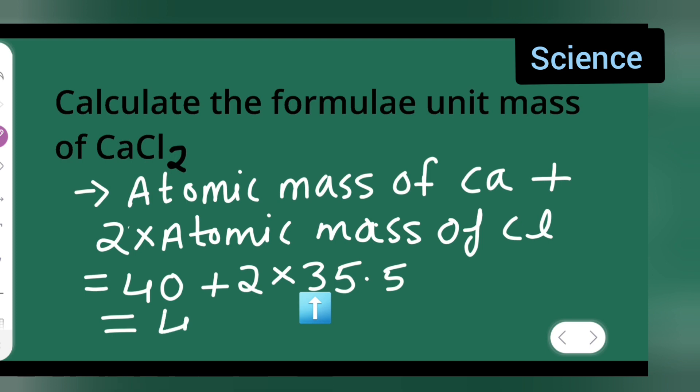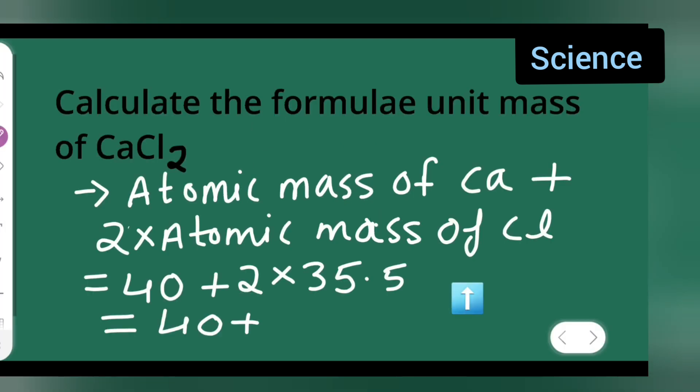This is equal to 40 plus 35.5 multiplied by 2. So 35.5 multiplied by 2: 2 fives are 10, carry one, 2 threes are 6 plus 1 is 7. The point will come here, so your answer is 71. So add these numbers.